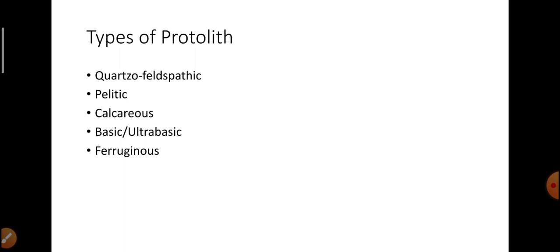Types of protolith: Protolith को अलग-अलग types में divide किया गया है. First is quartzofeldspathic rocks, जिसमें quartz और feldspar minerals बहुतायत में रहते हैं. Pelitic rocks — यह high aluminous rocks होती है. Calcareous rocks — calcareous means carbonate-bearing rocks, जैसे limestone और dolomite. Basic और ultra-basic rocks. Ferrogenous — वो rocks जिसमें iron-containing minerals होते हैं.